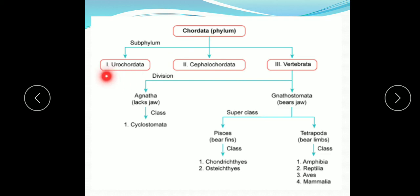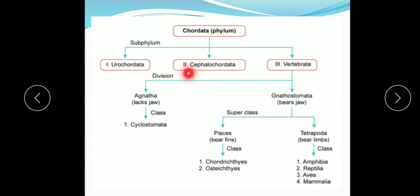Urochordata are the most primitive chordates and notochord is confined to the tail region only — 'uro' means tail. In Cephalochordata the notochord extends from the head region (cephalic region means head) to the tail region. In Vertebrata this notochord is found only in the embryonic stage; it is replaced by the vertebral column during development.